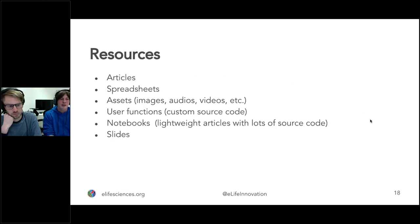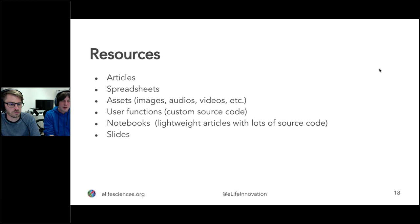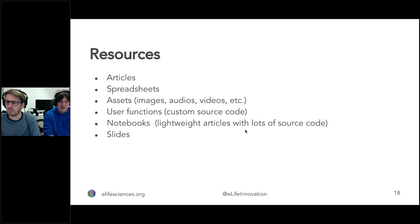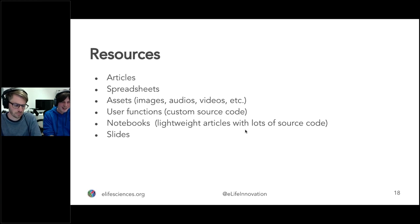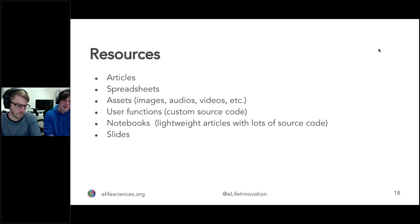The resources we currently consider include: articles — the narrative manuscript you'd edit in Microsoft Word; spreadsheets for working on data; assets like images, audio, and video; and user function libraries to extend the system with custom source code. There's also discussion of whether notebooks are a separate resource type or a special type of article — we think they're more like an article without a title and abstract, so probably covered using articles. In a future version we want to add slides as well.